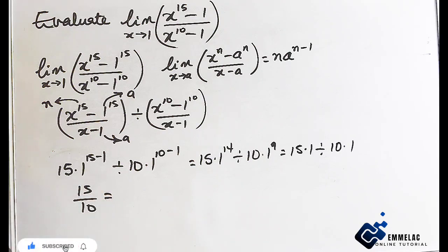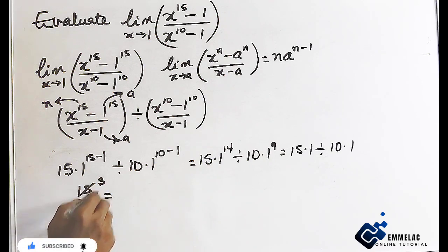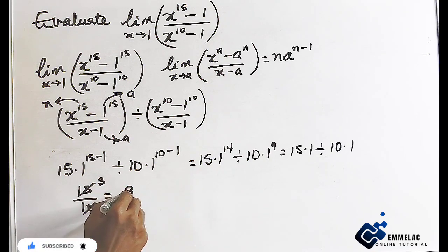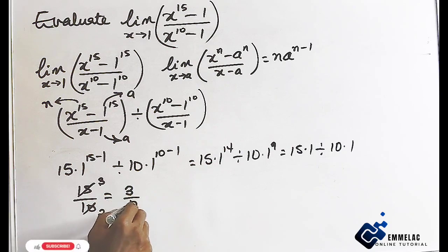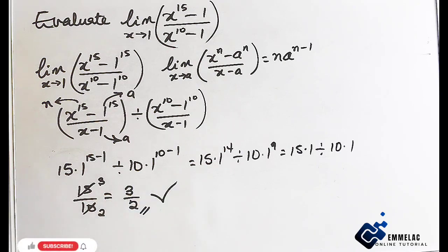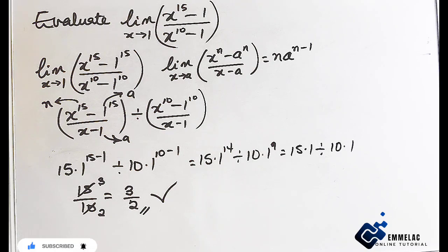Breaking this down: 5 goes into 15 giving 3, and 5 goes into 10 giving 2. So we have 3 over 2 — wait, 3 over 5 — that is our final answer. If you love what I've just done, please subscribe to my YouTube channel and click the notification button to be notified of all my videos in physics and mathematics. Thank you and God bless you.